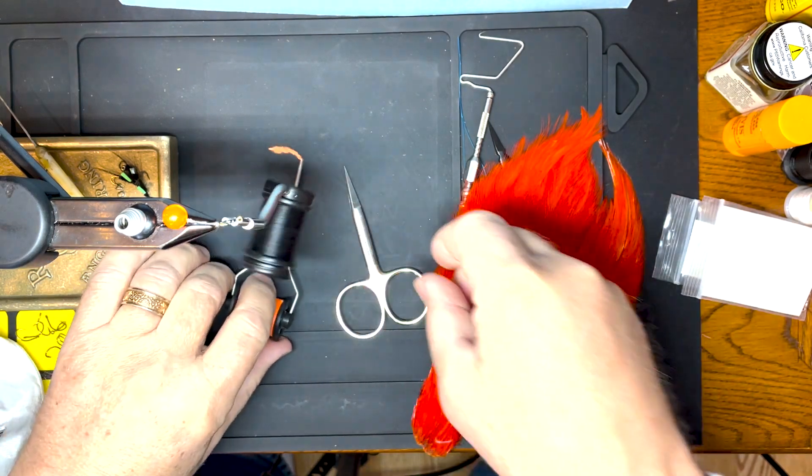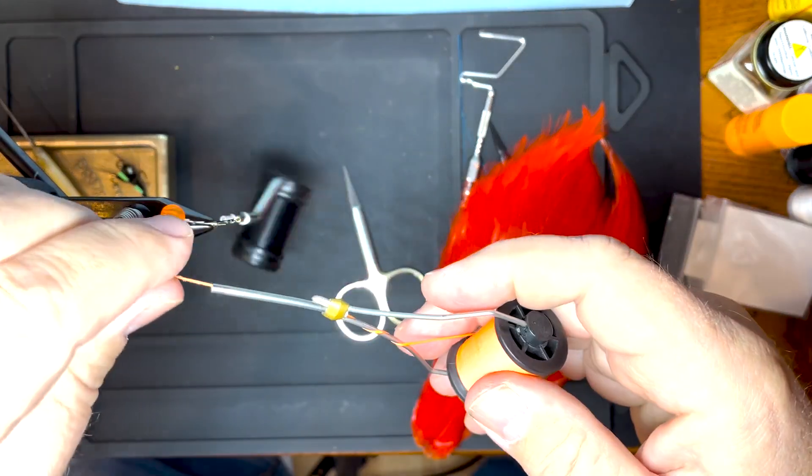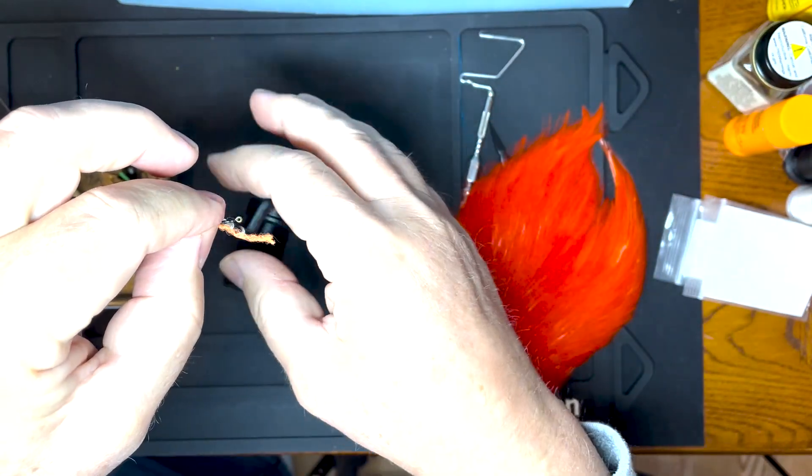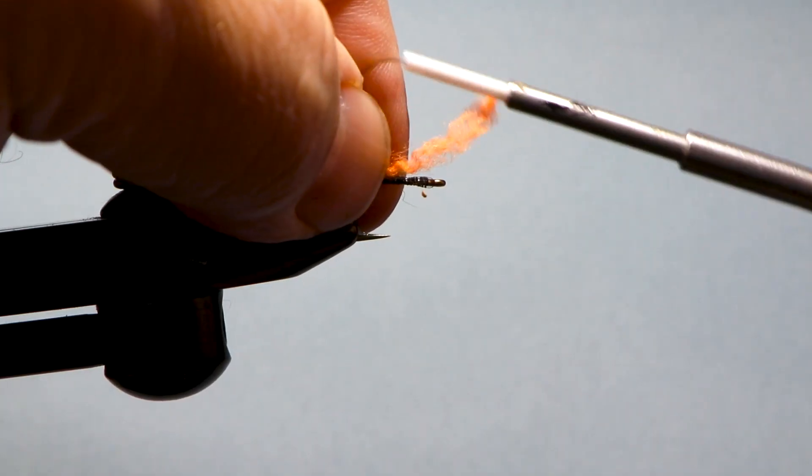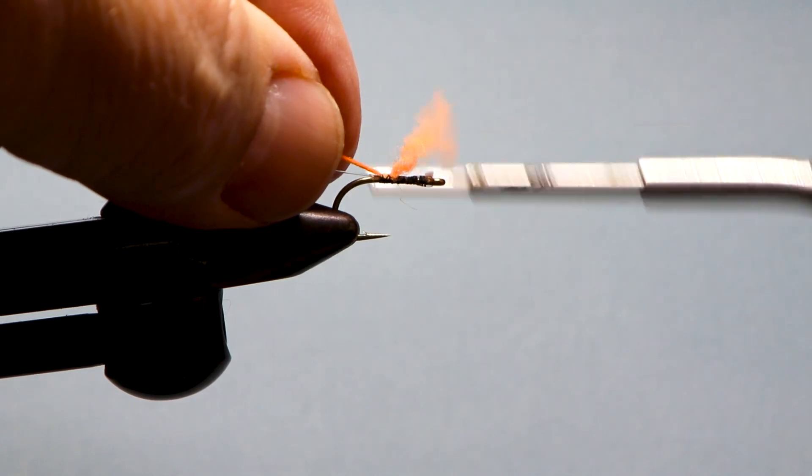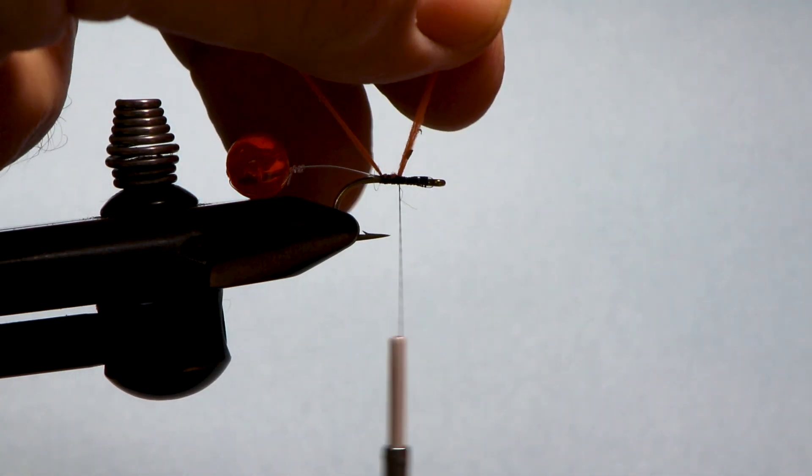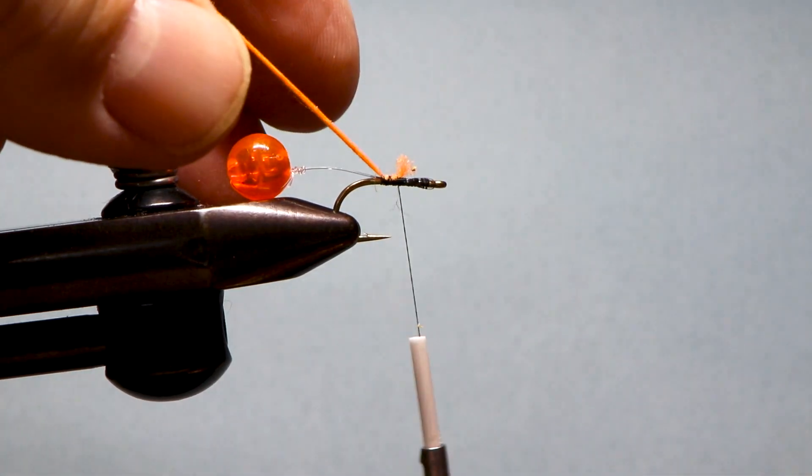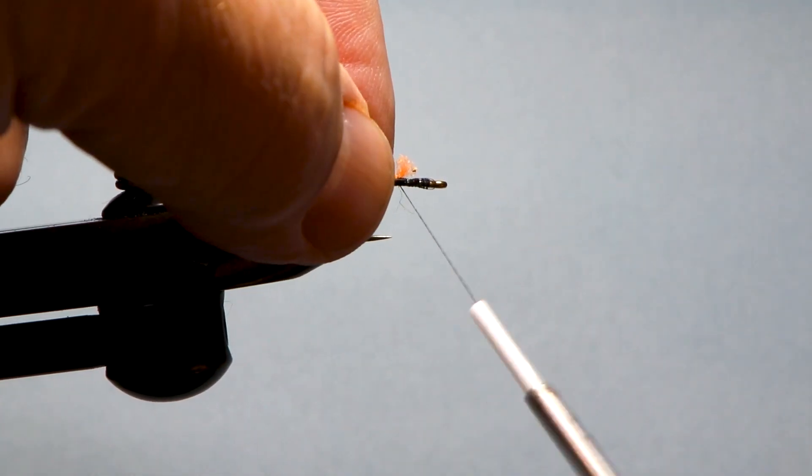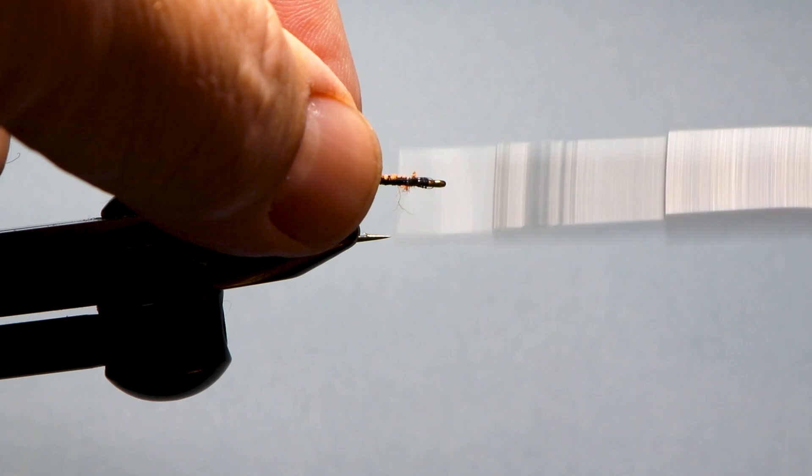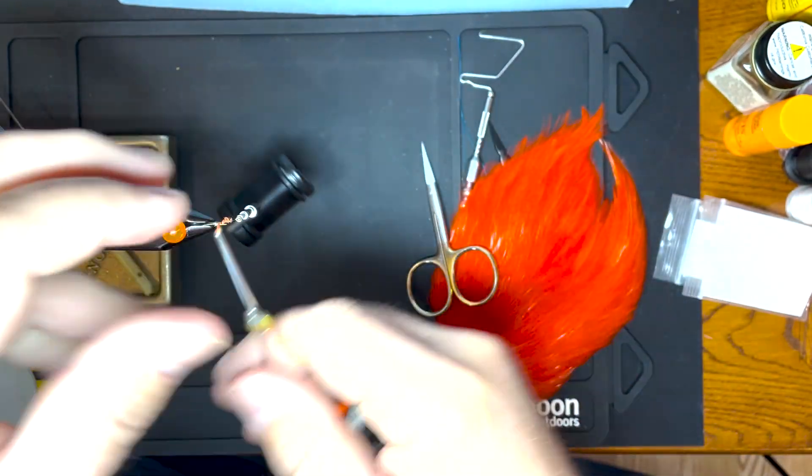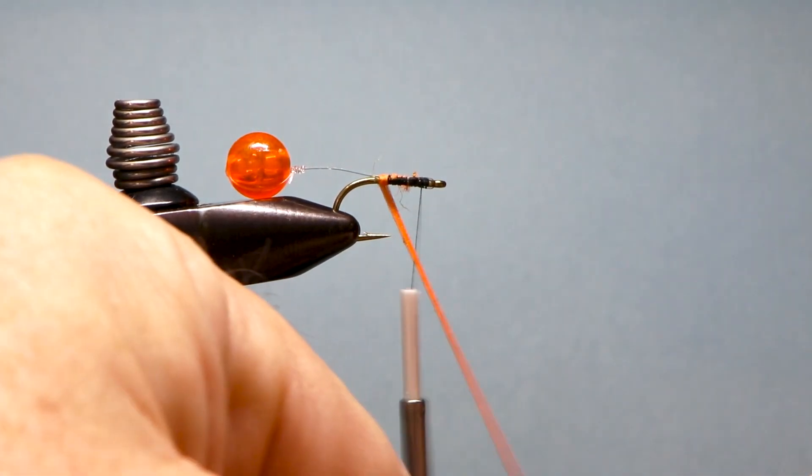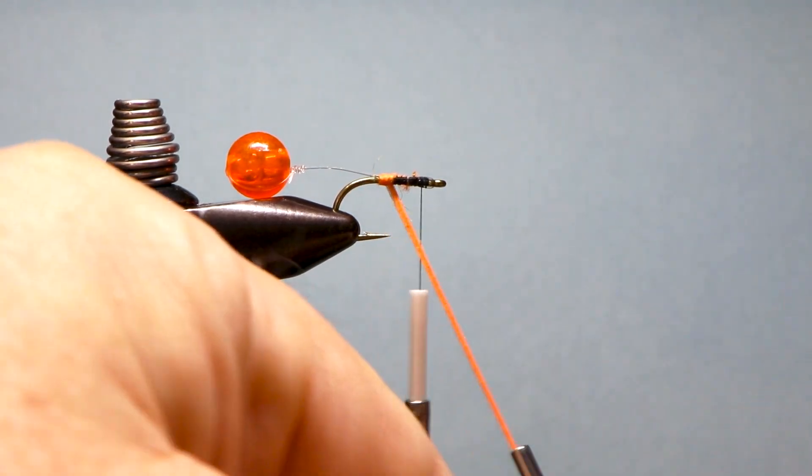Now the body is really simple so this one is just another bobbin with a thick orange thread and tie that in. Get that tied down good. I'm going to trim it. Just bring that forward. So I'm just going to use this other bobbin and I'm going to put down a thread body.